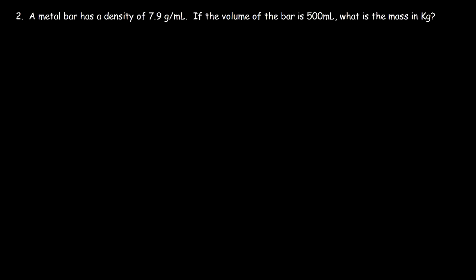Number 2. A metal bar has a density of 7.9 grams per milliliter. If the volume of the bar is 500 milliliters, what is the mass in kilograms?